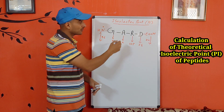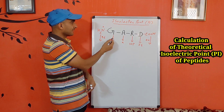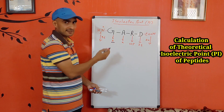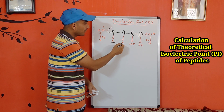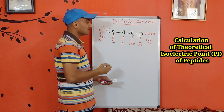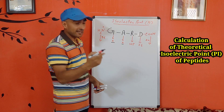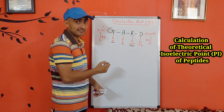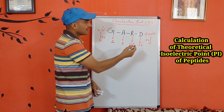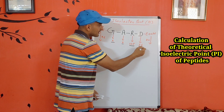You only need to consider the side chain groups of the in-between amino acids, if they are ionizable or not. In the case of glycine, the side chain is just a hydrogen atom and is not ionizable. Alanine has a methyl group, which is also not ionizable. In the case of arginine, the side chain is a guanidinium group, which is ionizable — it is a basic amino acid with a pK value of 12.5. Aspartic acid has an acidic carboxyl side chain group, which is ionizable with a pK value of 3.6.